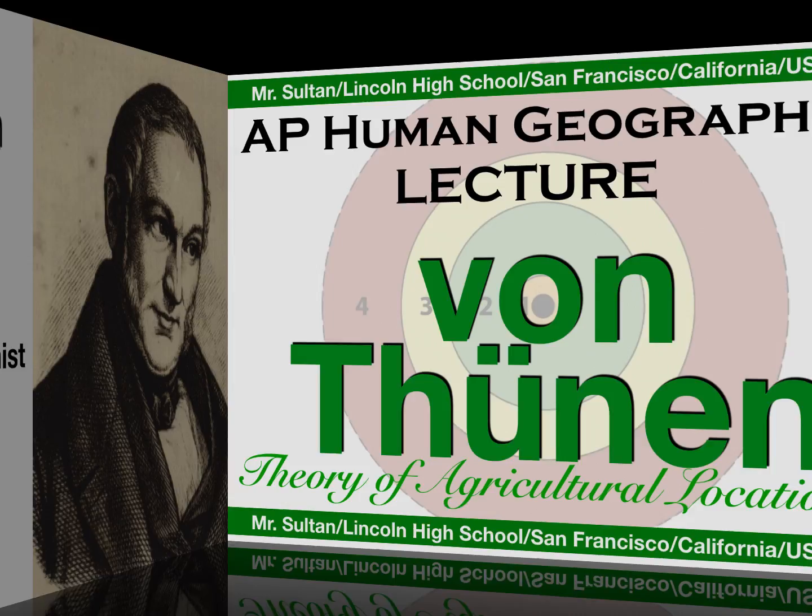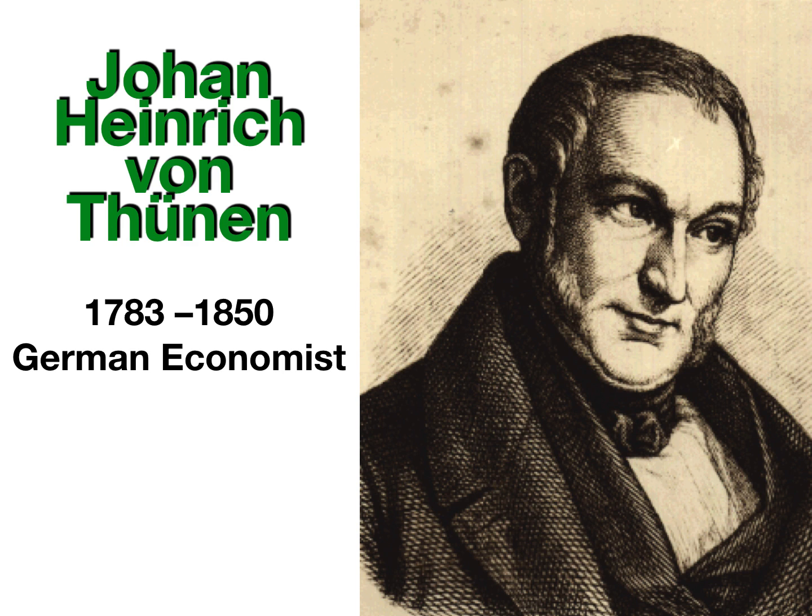The author of this theory is named Johann Heinrich von Thünen. He was not a geographer, but instead he was an economist. He lived in Germany between 1783 and 1850. So let's take a look at the model.